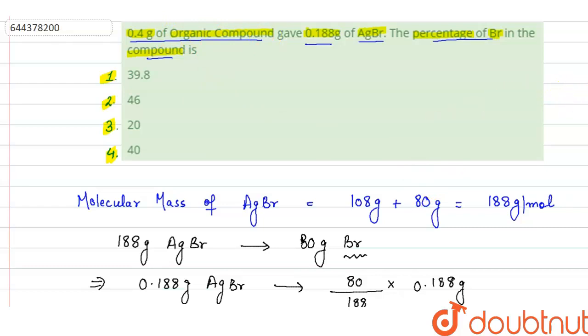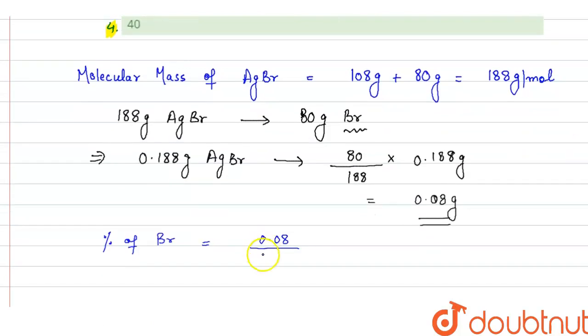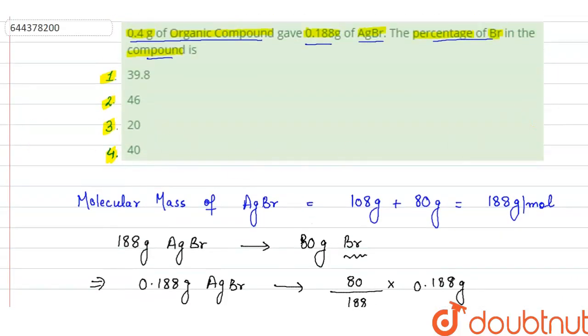So we are asked about the percentage. The percentage of bromine in given compound will be equal to 0.08 divided by mass of compound which is 0.4, multiplied by 100, and it comes out to be 20%. So in 0.4 gram of organic compound, there is 20% bromine. So 20 is given in option 3. So option 3 is the answer.